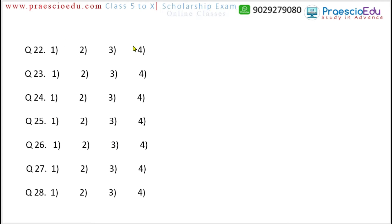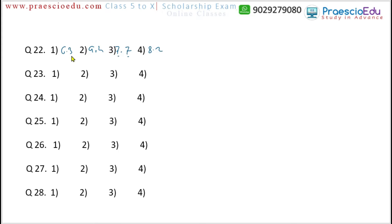Question 22: the options are 6.3, 9.4, 7.7, and 8.2. It is very simple — the digits on the left and right side of the decimal point are equal in options 1, 2, and 4 (6.3→no, 9.4→no, 7.7→yes). But 7.7 actually matches; 8.2 does not. Option 3 (7.7's pair) — checking the pattern, option number 3 is the different one.